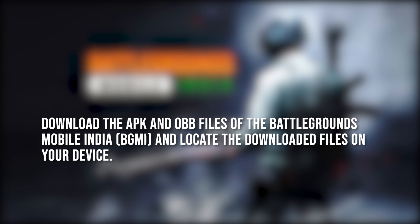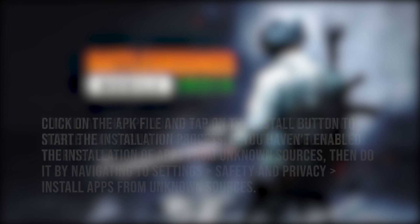Download them and then locate those downloads on your device. Click on the APK file and tap on the install button to start the installation process. If you haven't enabled the installation of apps from unknown sources, you're going to need to do that by navigating to Settings, Safety and Privacy, and then Install Apps from Unknown Sources.